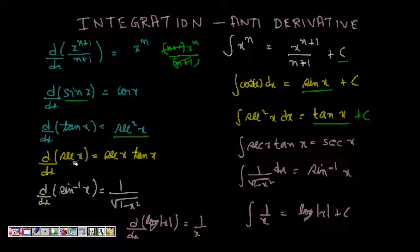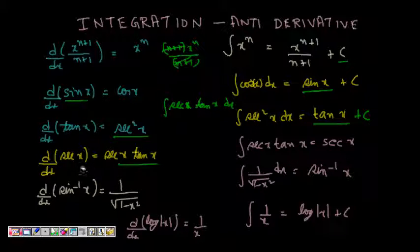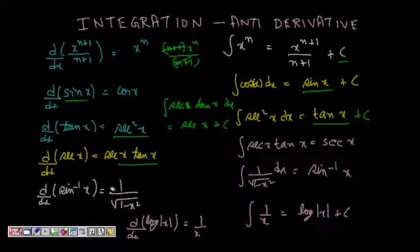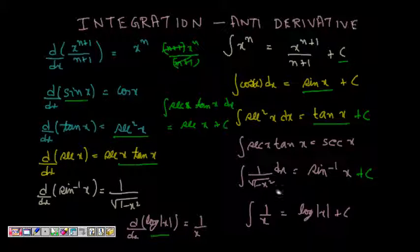The derivative of sec x is sec x tan x, so integrating sec x tan x dx gives sec x + c. Similarly, d/dx of sin⁻¹x equals 1/√(1 − x²), so integrating 1/√(1 − x²) gives sin⁻¹x + c. Note that for the power rule, n must not equal −1.